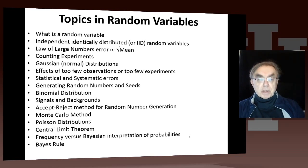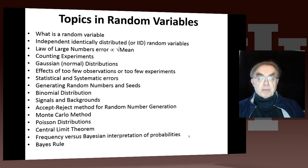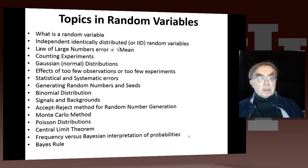We have important distributions — first the Gaussian or normal distribution, which you get when you look at the distribution of the average of large numbers of independent random variables.